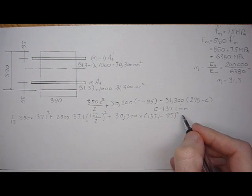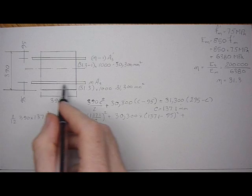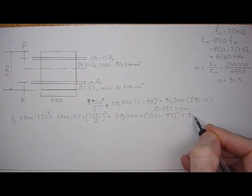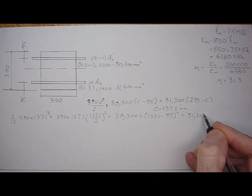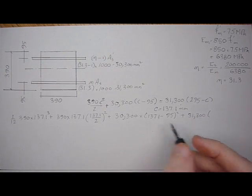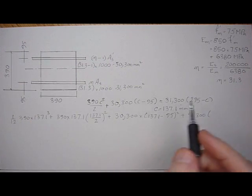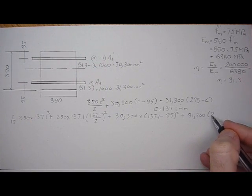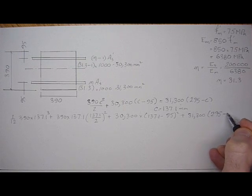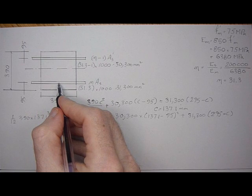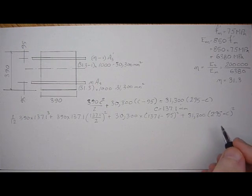This distance here is equal to C minus 95. And then plus the A·d squared of the transformed tension steel, that's 31,300 times D, where 390 minus 95 is 295, minus C, to give us this distance. Squared. C is 137.1.